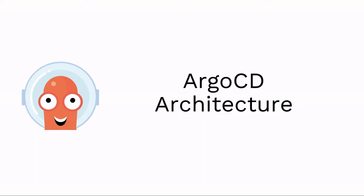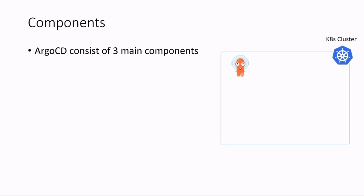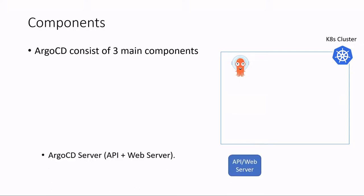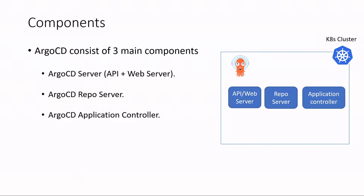Hello everyone. In this lecture we will talk about Argo CD architecture. Once we install Argo CD into a Kubernetes cluster, all the components will be running as pods. Argo CD consists of three core components: first, the Argo CD server, which consists of an API and web server; second, the repo server; and third, the application controller.